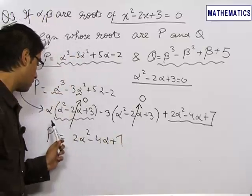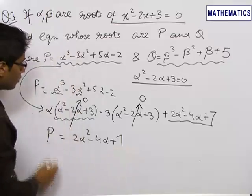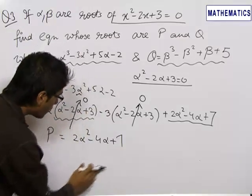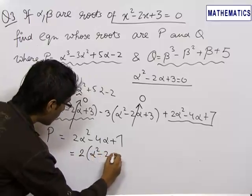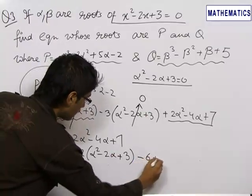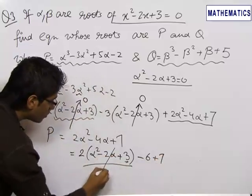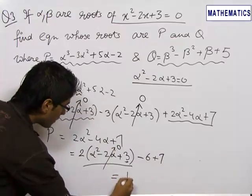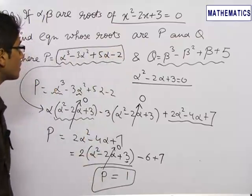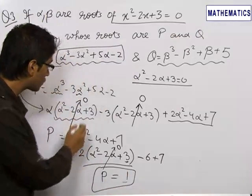The trick of creating the (α² - 2α + 3) factor has proved very useful, since the cubic term has reduced to a quadratic and the long expression has become smaller. We can write 2α² - 4α + 7 as 2(α² - 2α + 3) + 1. Since 2(α² - 2α + 3) = 0, p equals 1. Such a long term as α³ - 3α² + 5α - 2 reduces to simply 1 using this trick.